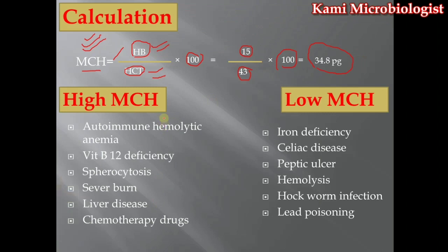There are some conditions that cause MCHC to become high. Due to autoimmune hemolytic anemia, the immune cells become activated against the RBC, causing them to rupture or hemolyze. This leads to a low level of RBC, which in turn causes the MCHC value to get high.